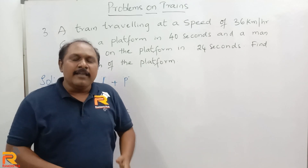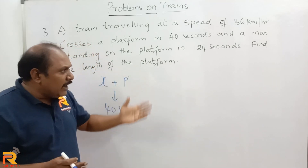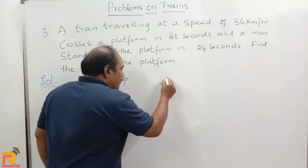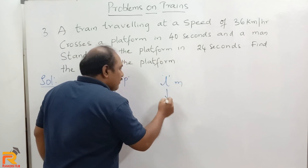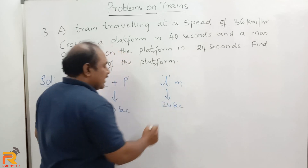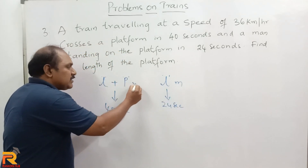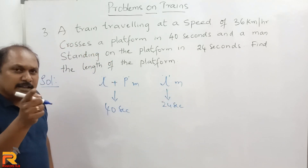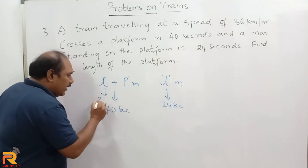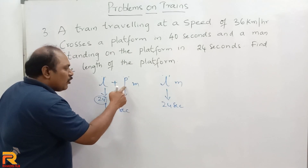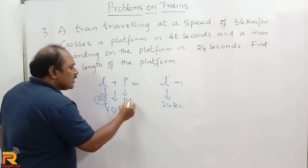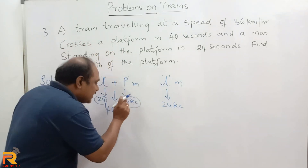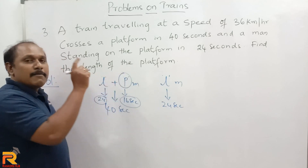What is the train doing in 24 seconds? It is traveling a distance equal to the length of the train, which is L meters. So: the train travels L meters in 24 seconds and L plus P meters in 40 seconds. Analyzing: L meters takes 24 seconds, so to travel P meters it should take 40 minus 24 equals 16 seconds. Whatever distance the train travels in 16 seconds, that will be the length of the platform.